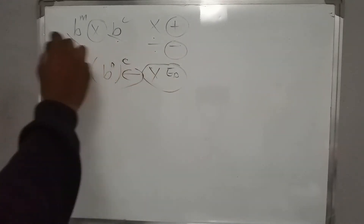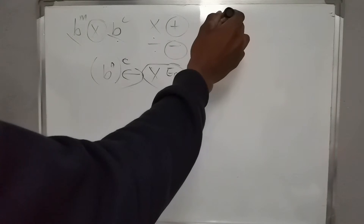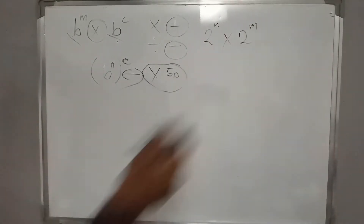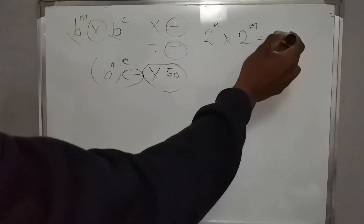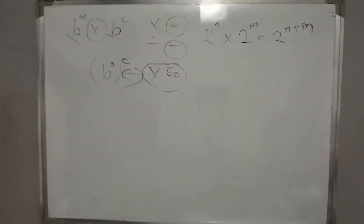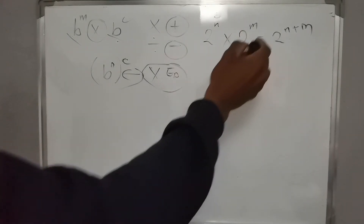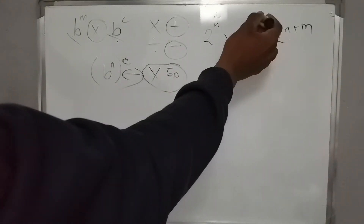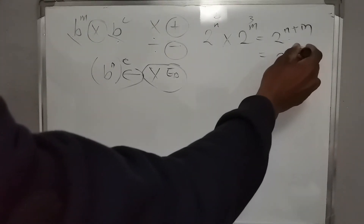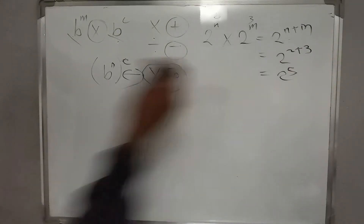So when multiplying, it becomes 2 raised to n plus m. For example, if b equals 2 and the exponents are 2 and 3, this becomes 2 raised to 2 plus 3, which makes this 2 raised to 5.